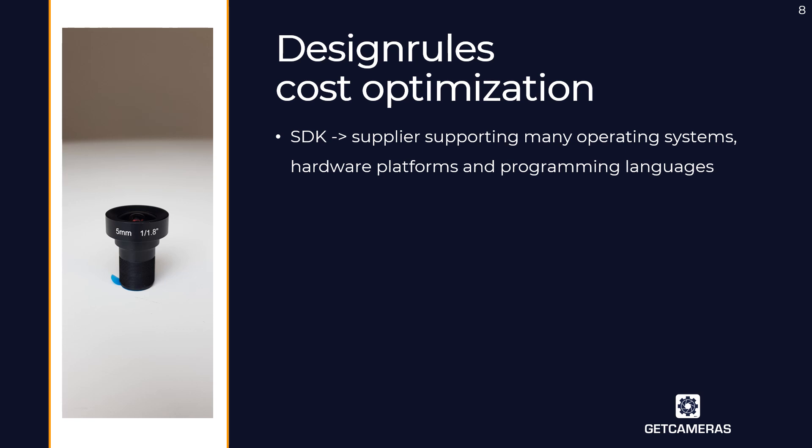The design rules for cost optimization are as follows. For the SDK, select one from a manufacturer that supports many operating systems, hardware platforms, and programming languages so you can reuse it for future developments. The manufacturer should also have many different image sensors and interfaces available. For the interface, if cable length between camera and PC is less than 4.6 meters, use USB3. If the cable length is longer, go for GigE. If you need much higher bandwidth, 5GigE is an option but prices are much higher.